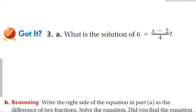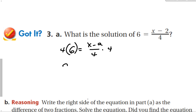Got-it problem: 6 equals (x minus 2) over 4. Multiply both sides by 4 to get 24 equals x minus 2. Then add 2 to both sides: 26 equals x.